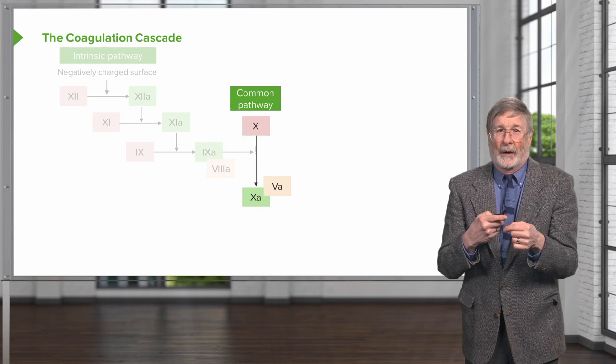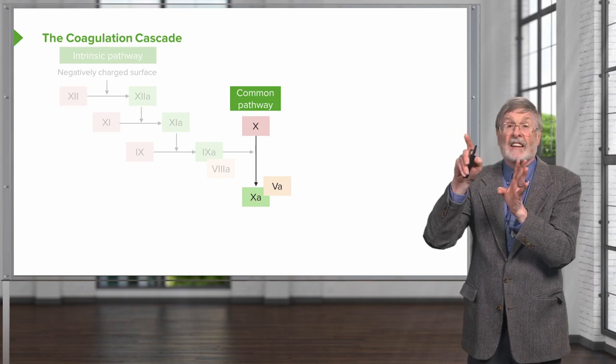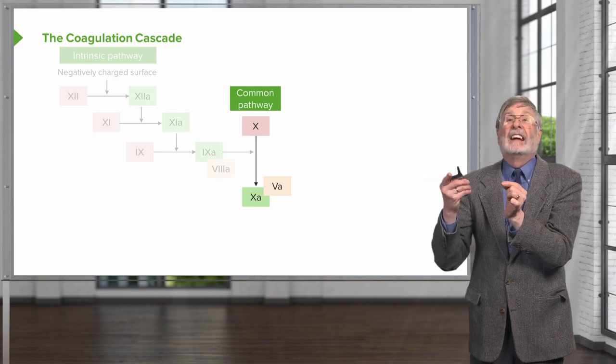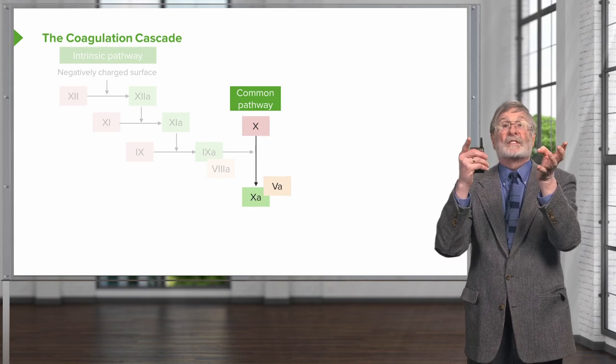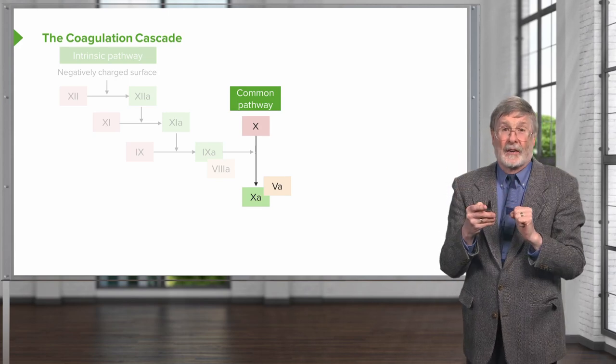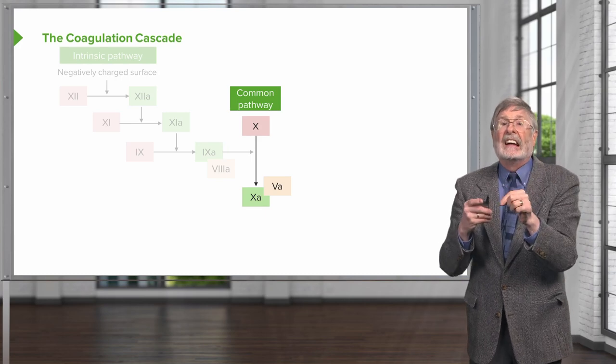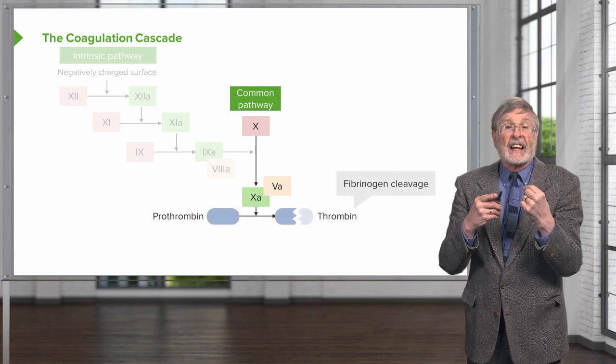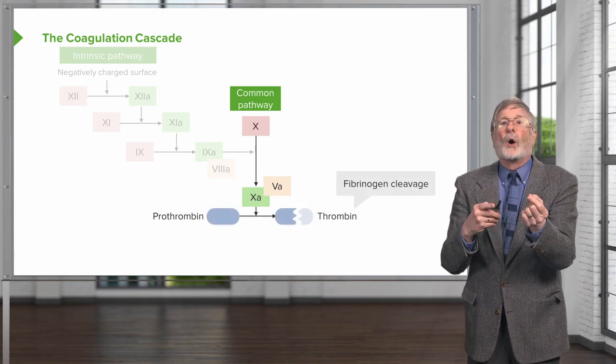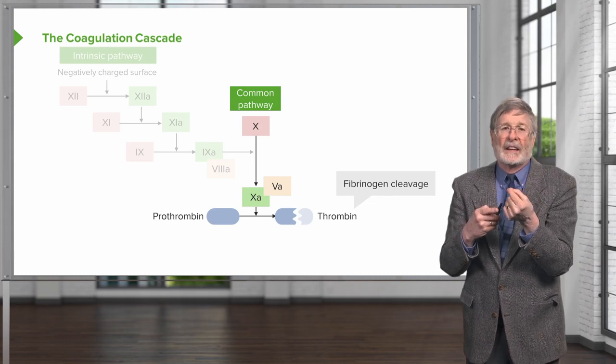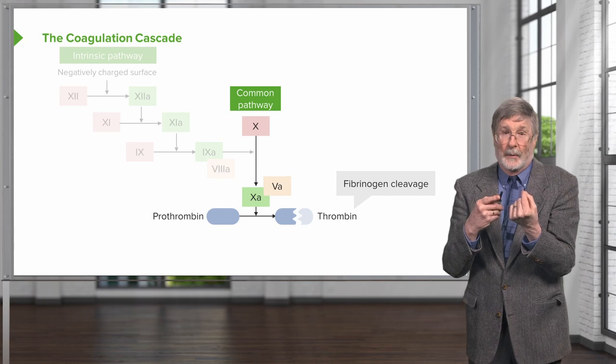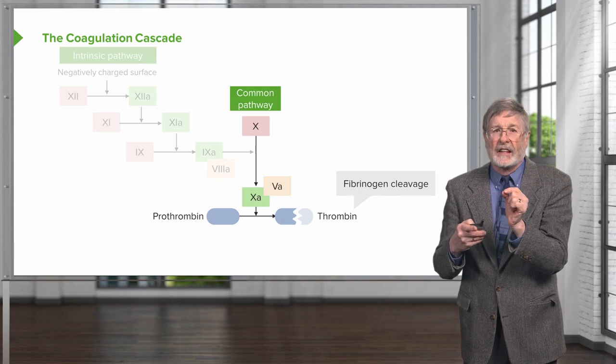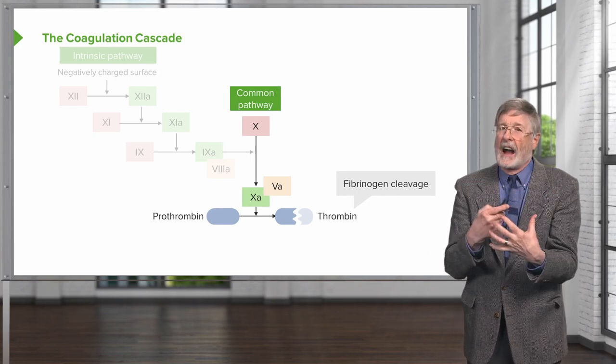There is a common pathway. In the middle here, on the right-hand side still blocked out, there's going to be the extrinsic pathway. It's also going to feed into this common pathway. On the common pathway, factor 10 has appeared. Factor 10 becomes 10a and interacts with cofactor 5a to get the next steps. We're going to activate prothrombin. It turns out that prothrombin is factor 2, and it goes to 2a, or thrombin, by proteolytic cleavage involving 10a and 5a acting in concert.